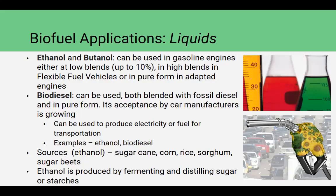When we start looking at biogas from anaerobic digestion, it's mainly used onsite for cogeneration applications — using it for heat and also driving a turbine to produce electricity. This has become increasingly common in places like dairy farms where they collect manure and put it into anaerobic digesters. For direct plant material, ethanol in particular — corn and sugar cane are the two big ones, but we also see rice, sorghum, and sugar beets. Those are all things we actually consume as food sources as well.